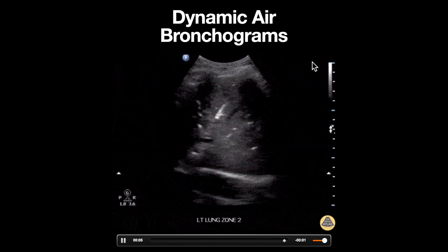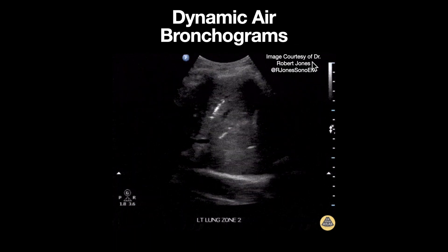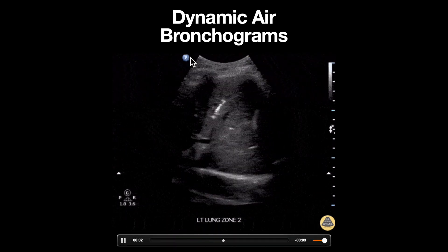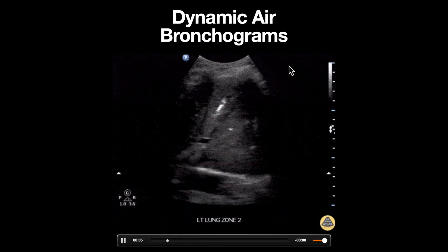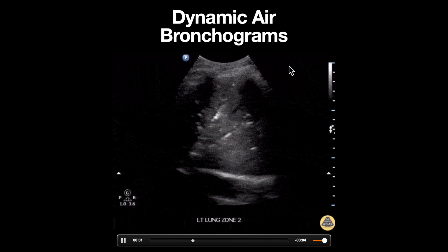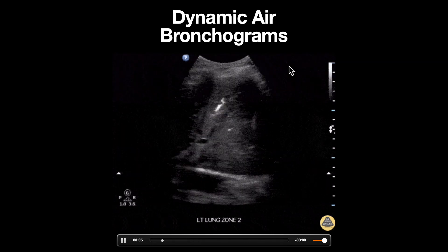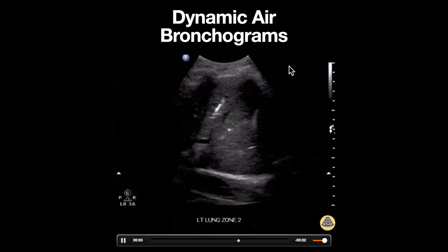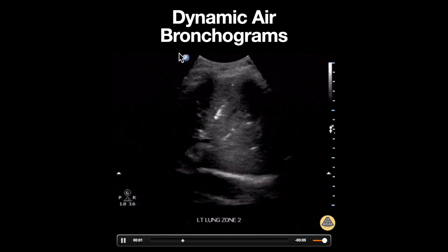This is an ultrasound clip demonstrating dynamic air bronchograms and hepatization in a left lower lobe pneumonia. A curvilinear probe is used, as delineated by the shape of the probe footprint at the top of the screen. Based on the structures we're seeing, the probe appears to be placed in a coronal orientation on the lateral aspect of the patient's chest wall, approximately in the mid-axillary line with the probe indicator directed towards the patient's head.